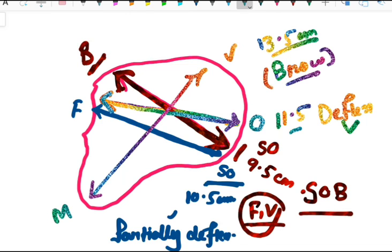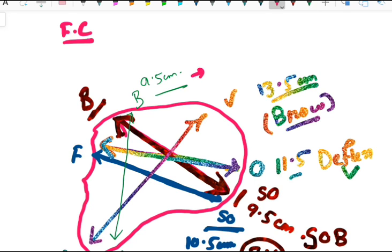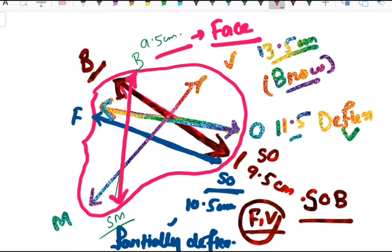The last diameter is the submentobregmatic diameter. It connects the bregma and the mental region, as you can see in the drawing. Its length is 9.5 cm. This diameter is very important as it is the indicator of face presentation.